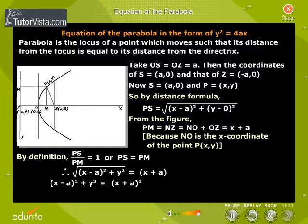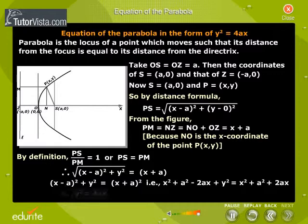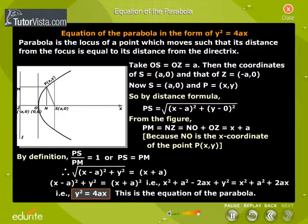Squaring both sides, we get x square plus A square minus 2Ax plus y square is equal to x square plus A square plus 2Ax. That is, y square is equal to 4Ax. This is the equation of the parabola.